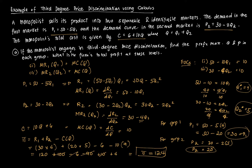That's the profit under third degree price discrimination. Note that market group one is less price sensitive than market group two, because the price charged to group one is higher than the price charged to group two.